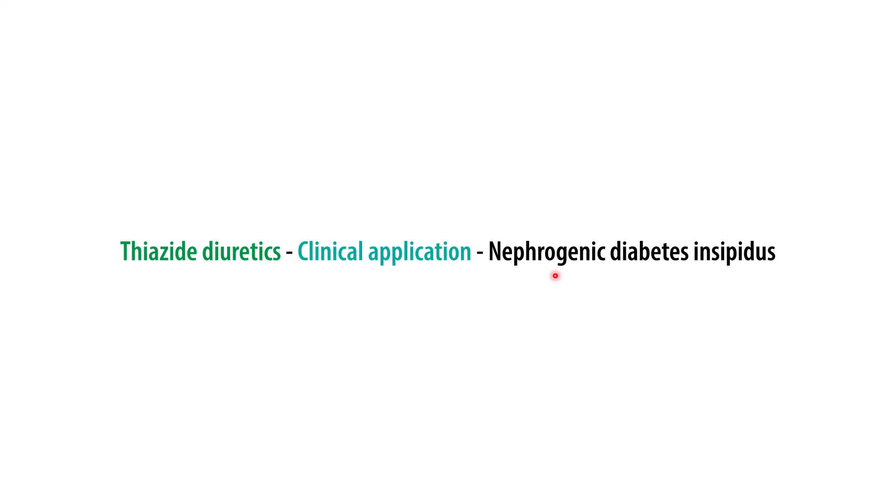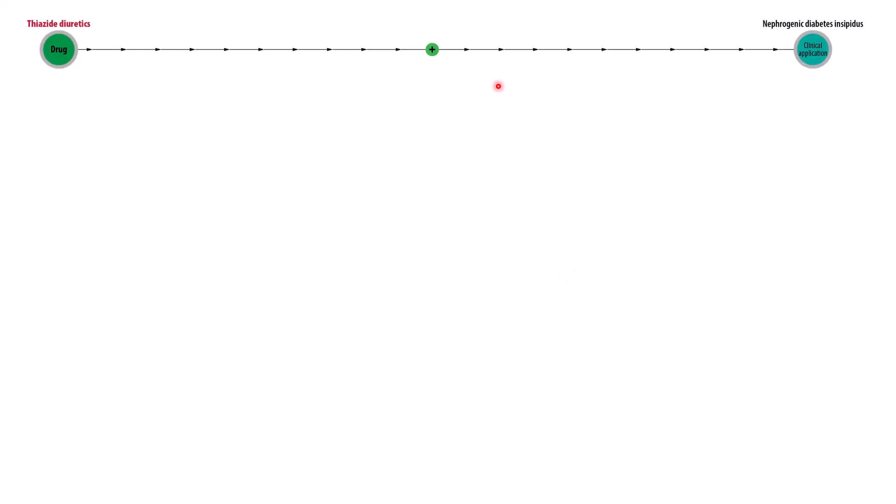Hi and welcome. Here we're going to talk about how thiazide diuretics can be used to treat nephrogenic diabetes insipidus. So let's start off with our relationship between thiazide diuretics and how they're used to treat nephrogenic diabetes insipidus.